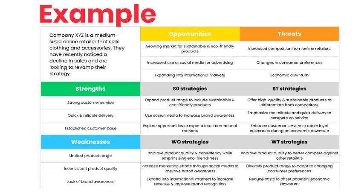ST strategies — leverage strengths and address threats: offer high quality and sustainable products to differentiate from competitors, emphasise reliable and quick delivery to compete on service, enhance customer service to retain loyal customers during an economic downturn. WT strategies — address weaknesses and threats: improve product quality to better compete against other retailers, diversify product range to adapt to changing consumer preferences, reduce costs to offset potential economic downturn. By using this TAILS analysis, company XYZ is able to generate a range of potential strategies that consider both internal and external factors, and identify opportunities for growth while addressing potential challenges.